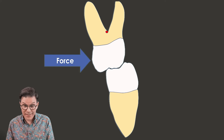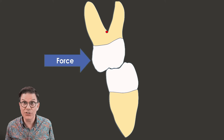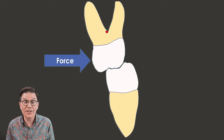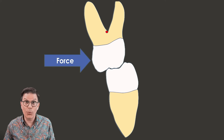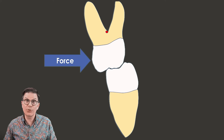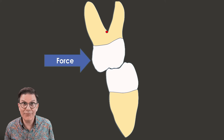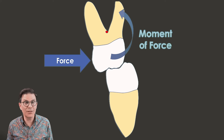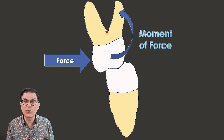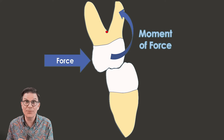One advantage of clear aligners is that we have the whole surface available — we can apply a force on the buccal, lingual, or occlusal surfaces everywhere we have access. When we push from the palatal or lingual to correct a crossbite, the force is not applied in line with the center of resistance. This creates a moment of force — a tendency for the tooth to rotate around its center of resistance.